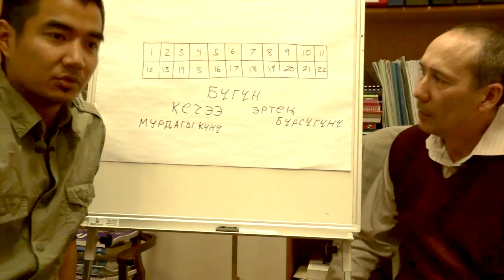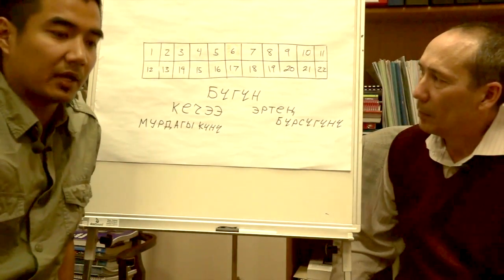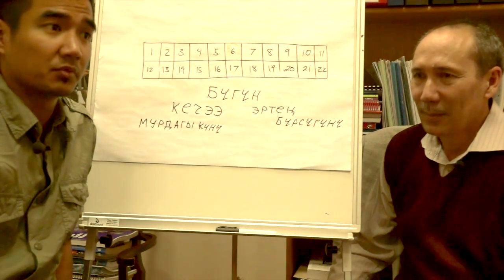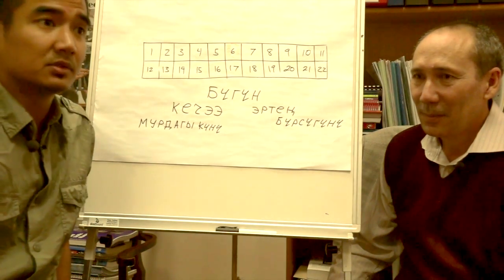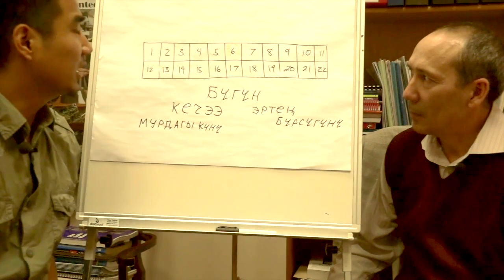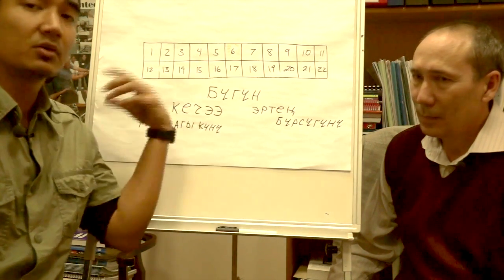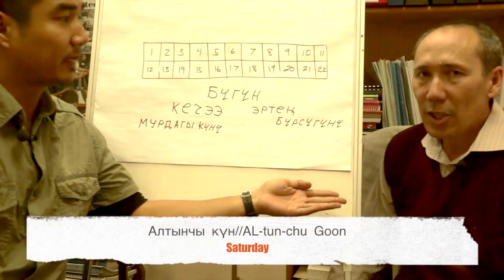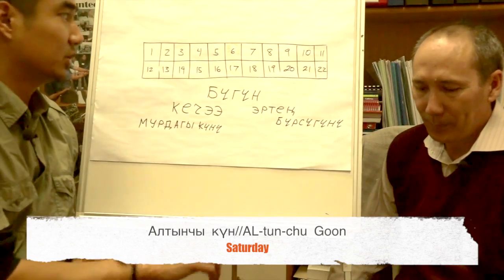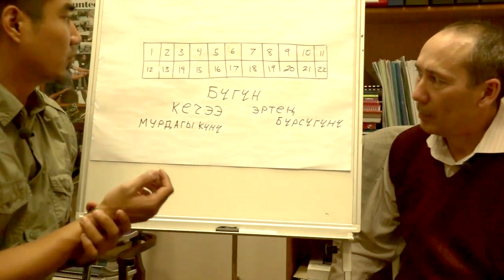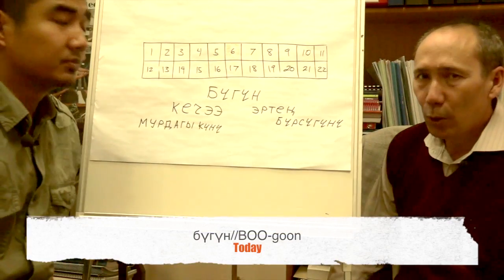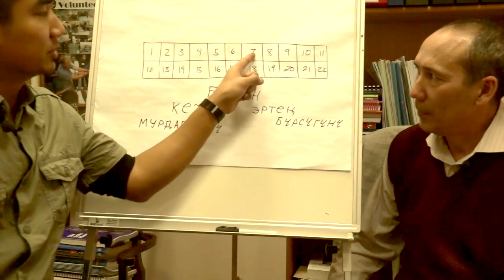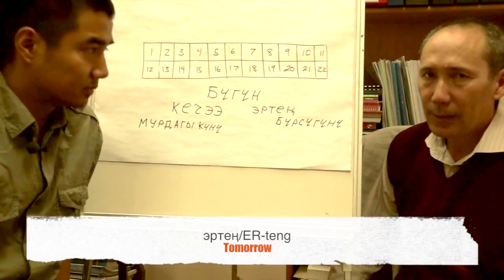So now we are going to review some time words that revolve around the calendar. These are not all the words that exist, but they are the most useful ones when referring to the days around today. We will say that the sixth day of the week — which according to calendars in Kyrgyzstan is Saturday, "Altın Çıkın" — is today. The word for today is "Bıgın." To refer to tomorrow, it would be "Erten."